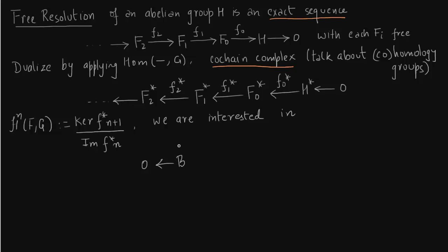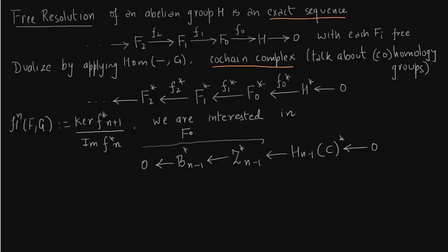First you write down the exact sequence connected to a homology group as done before: B_(n-1) going into Z_(n-1), which maps into the homology group via the projection map. Now I write the dual sequence. This dual sequence is not necessarily exact. Although we started with an exact sequence, this part — which I call the free resolution — is just a co-chain complex. We are interested in the homology groups of this. The co-kernel of i*(n-1) is nothing but the first co-homology group, which follows from the definition.